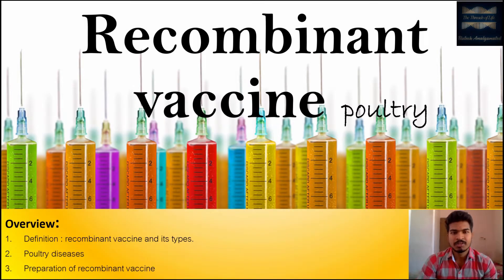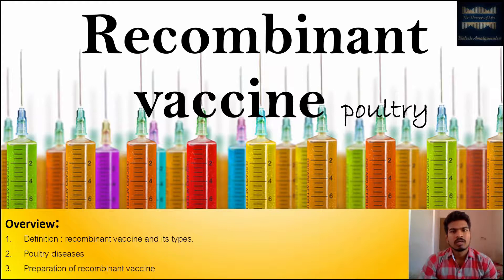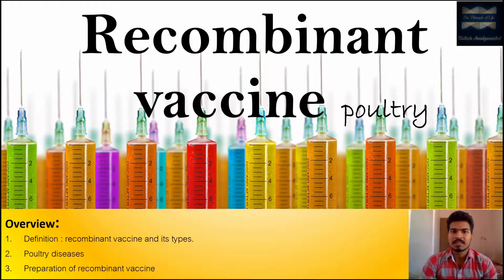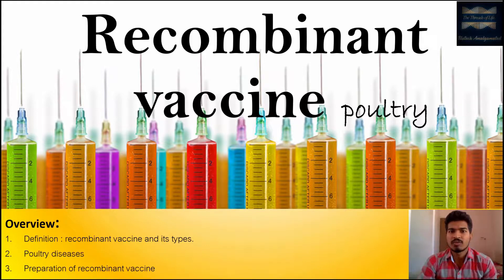Hi there, this is our YouTube channel Biotech Amalgamated, and today we are going to discuss recombinant vaccines used in poultry farming. In this video, we'll see what the different types of recombinant vaccines are and how they are prepared at a laboratory or commercial scale, with one example for each type. First of all, what is a vaccine? A vaccine is a biological preparation that provides us acquired immunity.